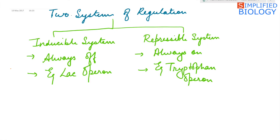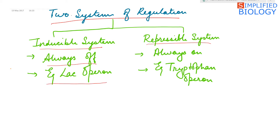There are two systems of regulation. One is an inducible system and the second is a repressible system. The inducible system is always off, and the best example of the inducible system is lac operon. The repressible system is always on, and the example of the repressible system is tryptophan operon.